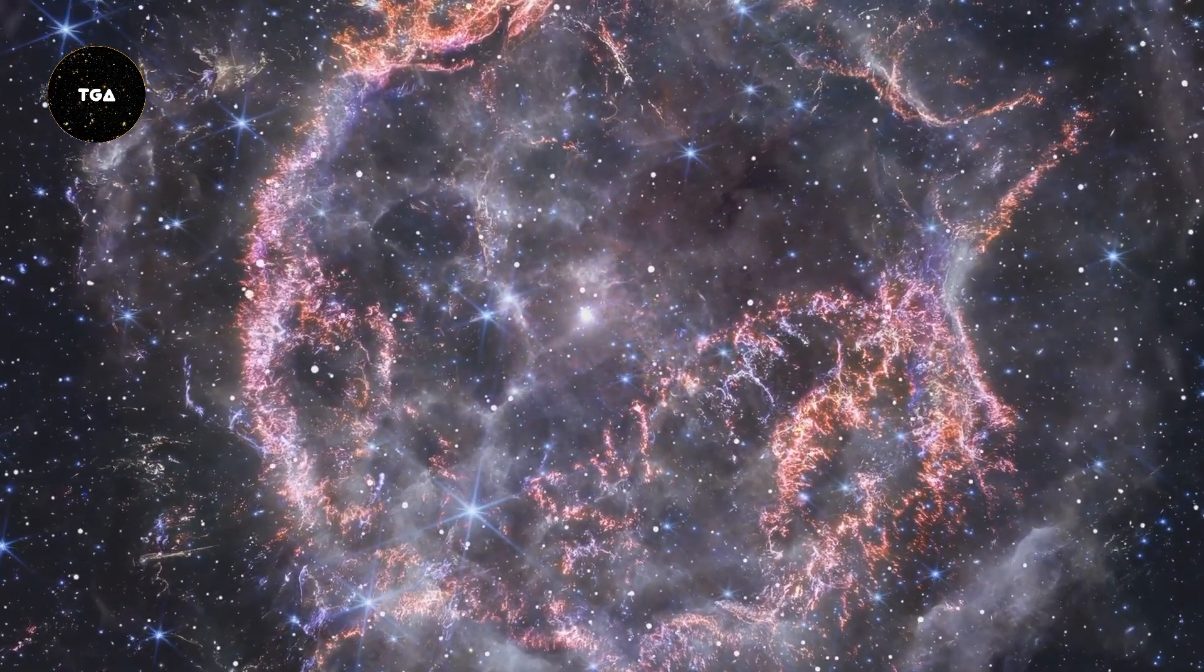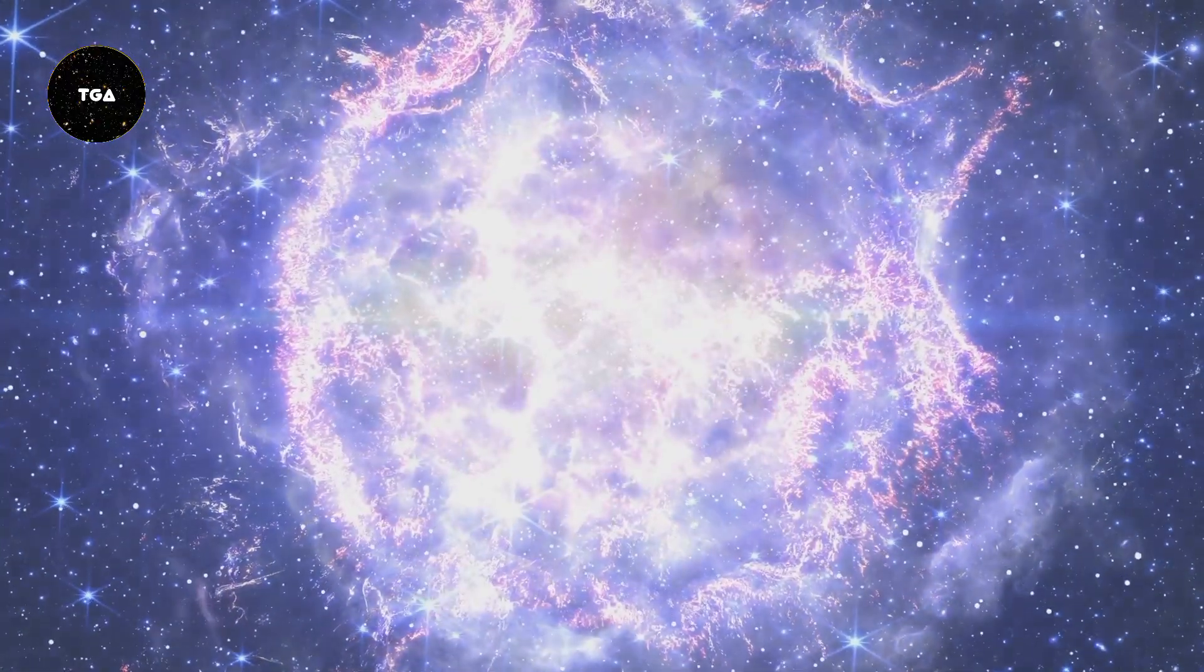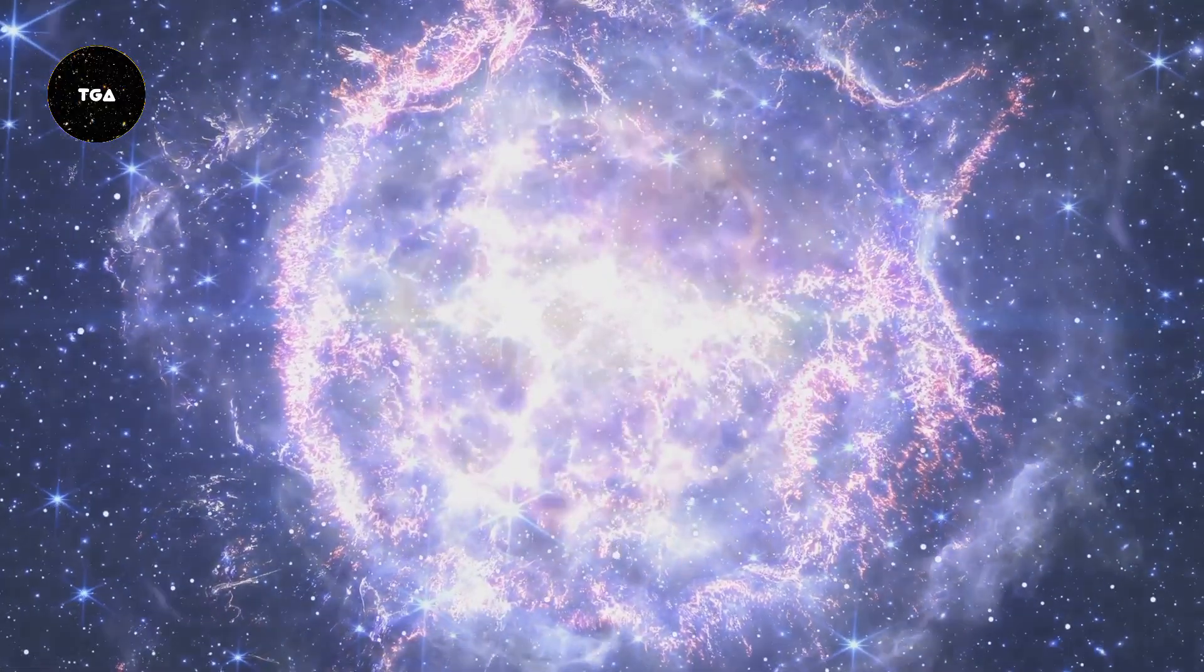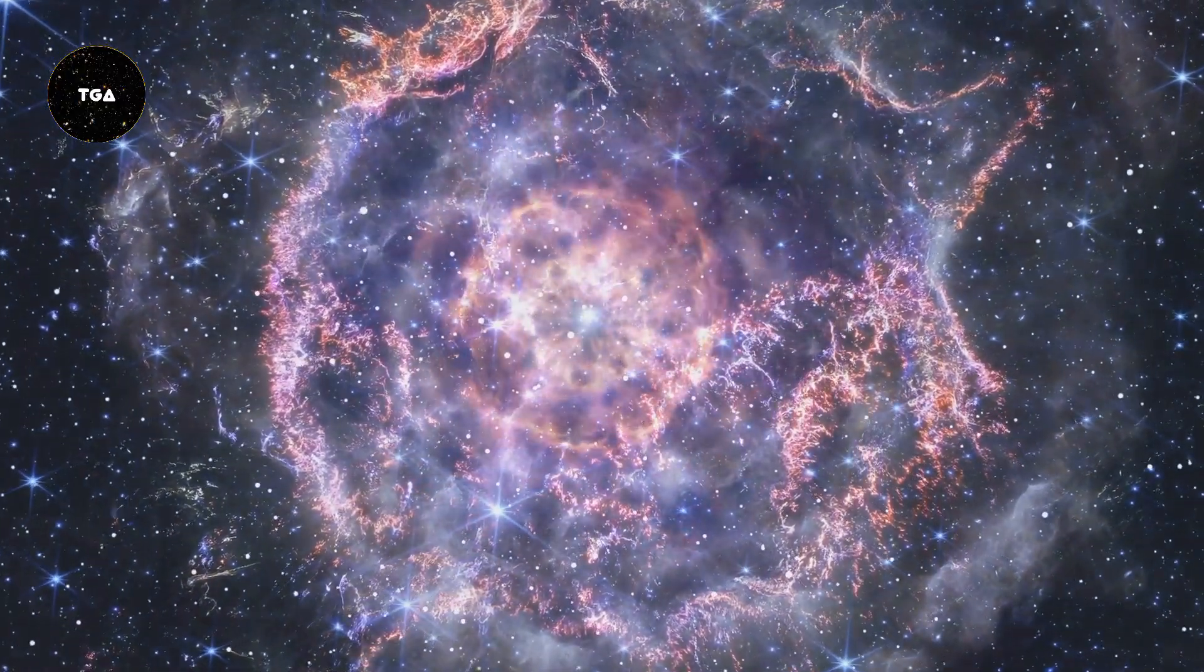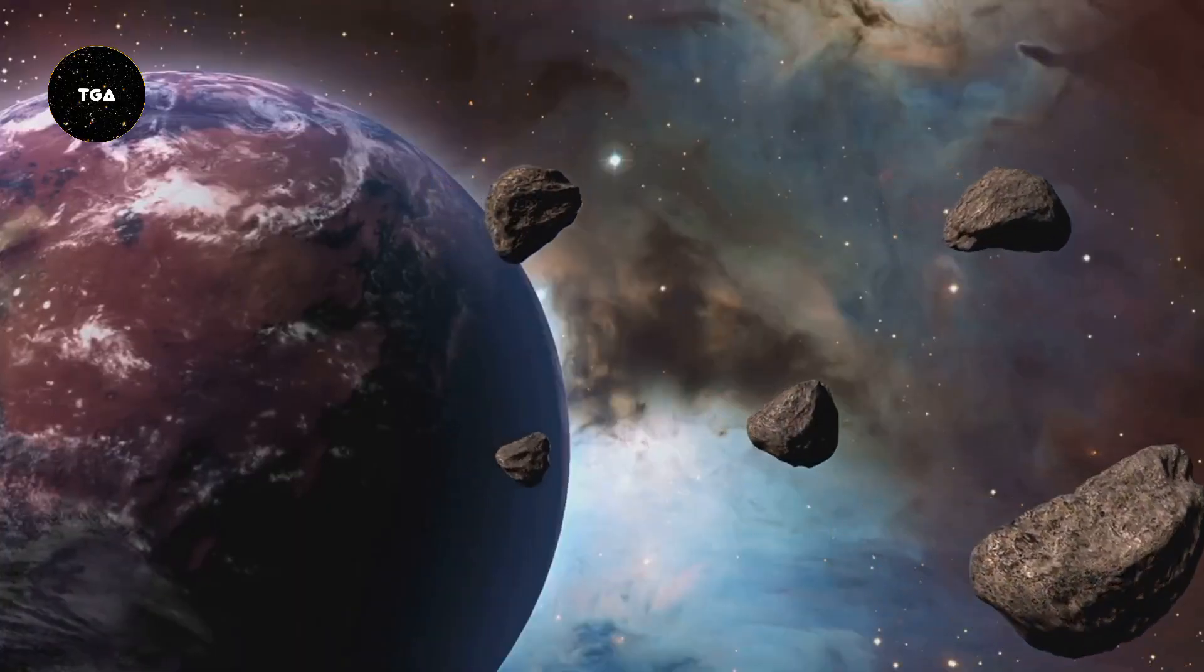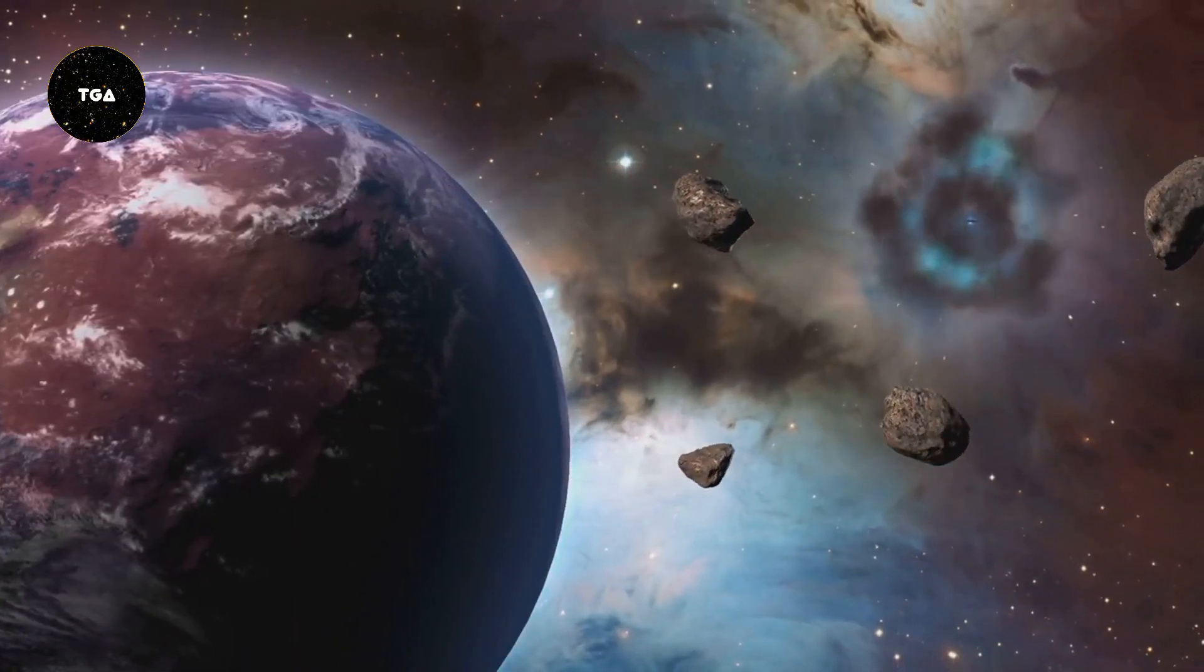Supernovae are incredibly bright. For a short period, they can outshine entire galaxies. They play a crucial role in the universe by dispersing heavy elements like carbon, oxygen and iron into space. These elements are essential for the formation of planets and life.